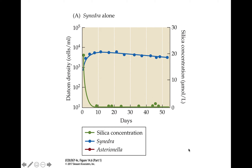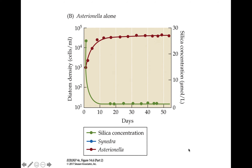Here in this figure, you're seeing the species Synedra. It reached carrying capacity when grown by itself, and the level of silica, shown in green, dropped down as it was consumed. Same thing for Asterionella — shown in red, it reached a carrying capacity and silica concentration dropped as that resource was consumed.